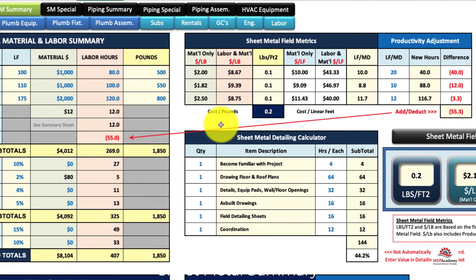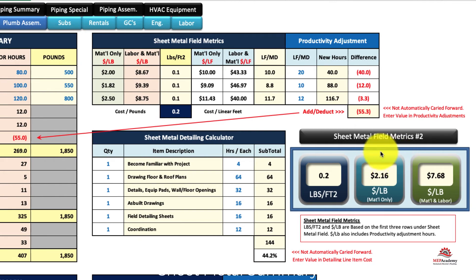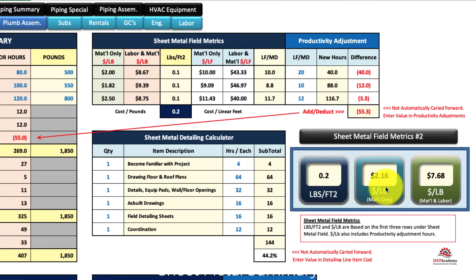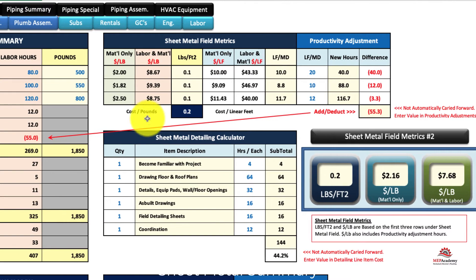Over here there's a mini metrics section which will show you pounds per square feet cumulative, and your dollars per pound for material and for material and labor — cumulative for the first three line items.